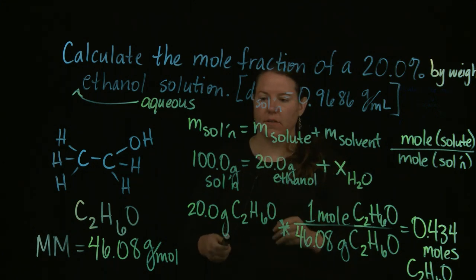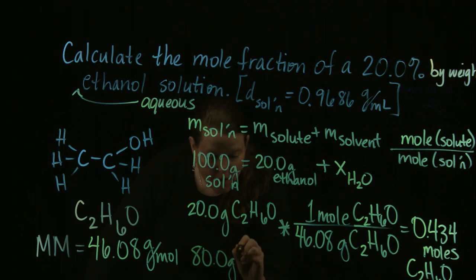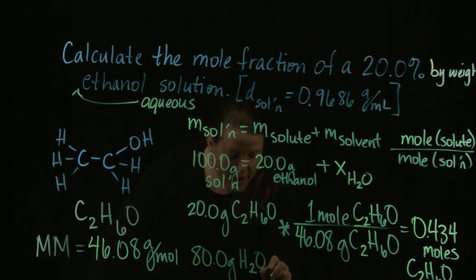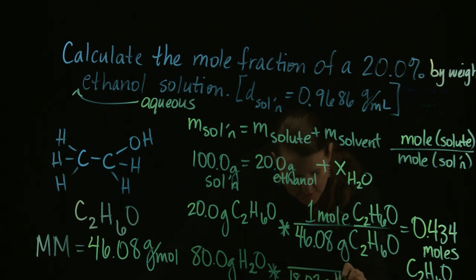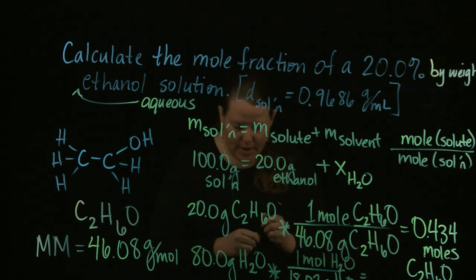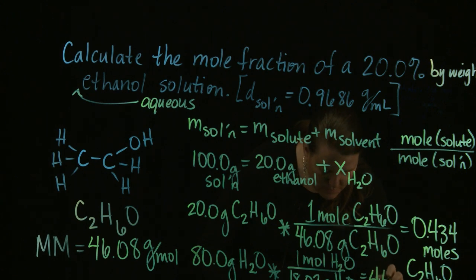So if I find x here, I just take 100 minus 20. That means I have 80 grams of water. And how do I go from grams to moles of water? 18.02 grams of water in a mole. Look at that. Life is so good.